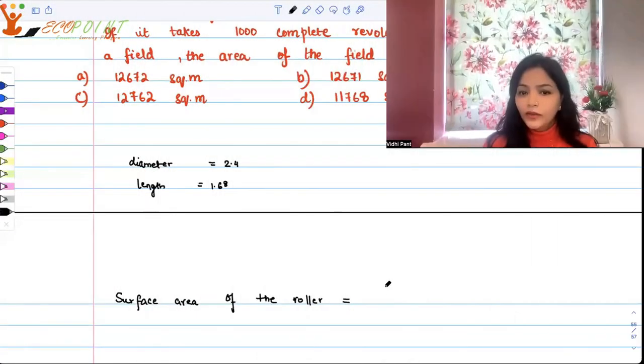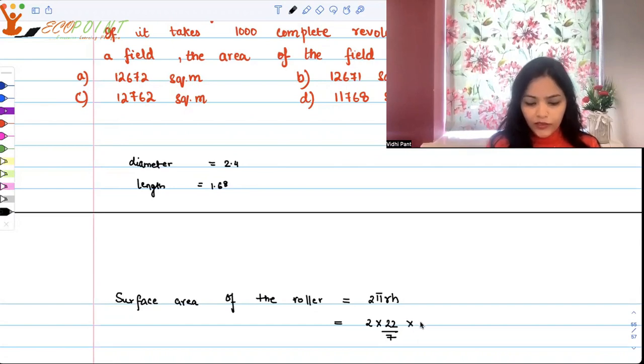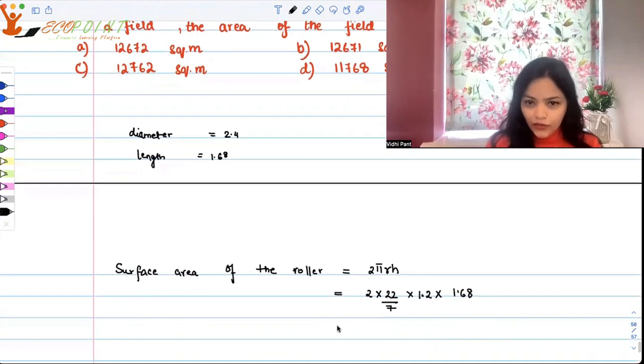We have radius and length also. It will be 2 times 22 upon 7 for π, times radius is 1.2 because diameter is 2.4, and height is 1.68. You will have to calculate this and you will figure out that you're getting 12.672 square meters as the surface area.